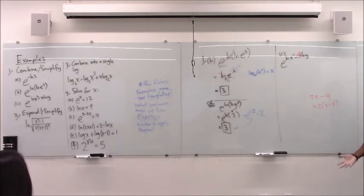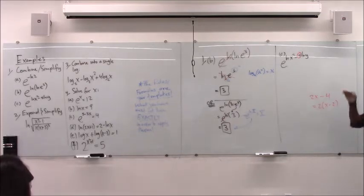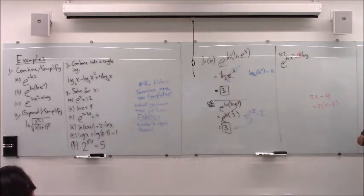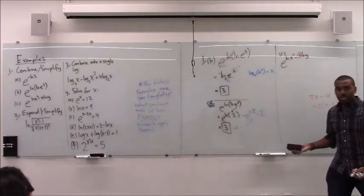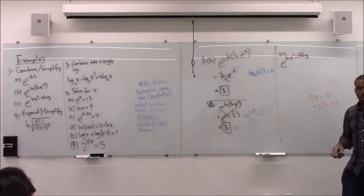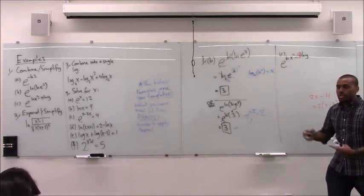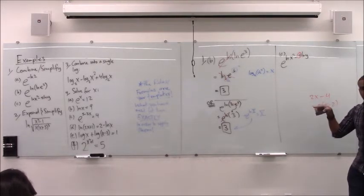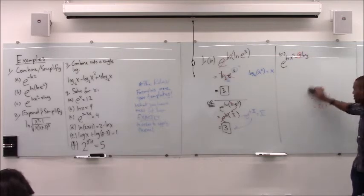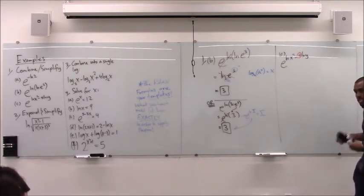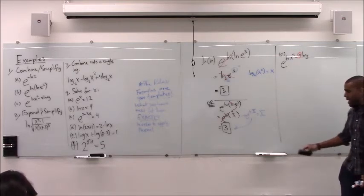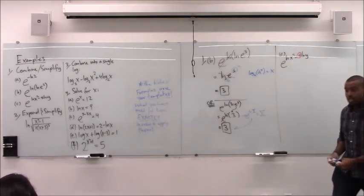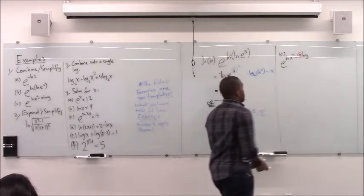Here's how you avoid that fate: every single line you write down, ask what rule allowed me to make that step. If you can't think of a rule, it's wrong — do something else. Eventually you'll train your brain into knowing what's right and what's wrong, and it'll automatically give you the right answer at the first prompt.